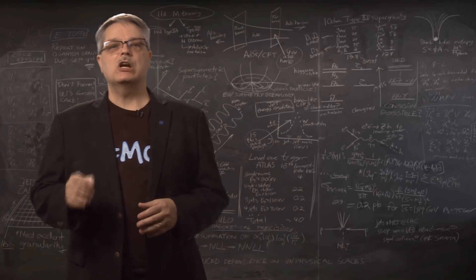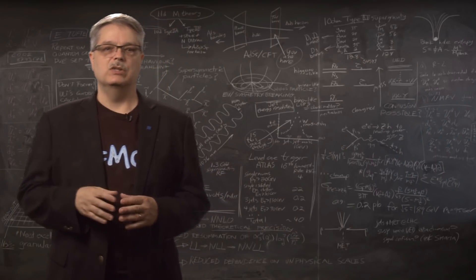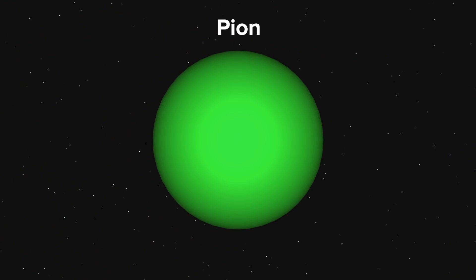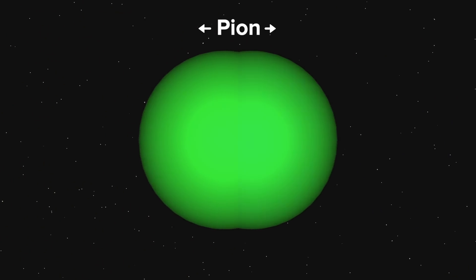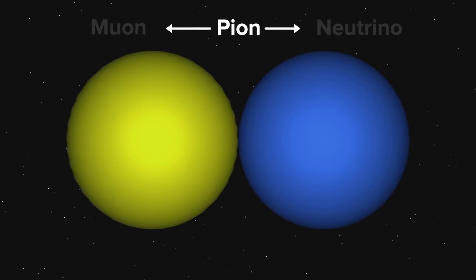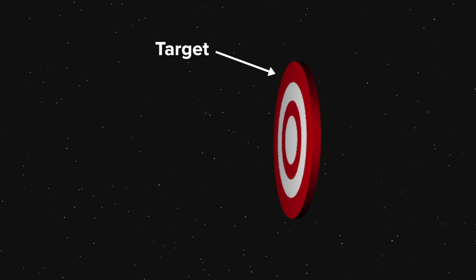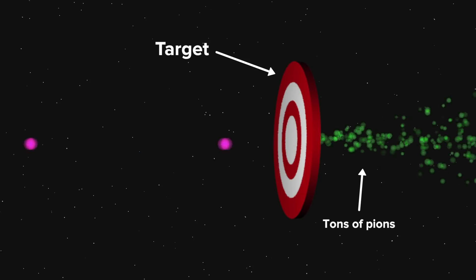To make a beam of neutrinos, we start with a beam of charged pi mesons, which we also call pions. Pions are nice because they decay essentially 100% of the time into a muon and a neutrino. It's also nice because pions are the most commonly made particle when you slam a particle beam into a target. This makes it possible to make tons of pions and consequently tons of neutrinos.